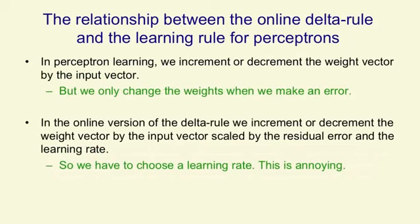There's an interesting relationship between the delta rule and the learning rule for perceptrons. If you use the online version of the delta rule where we change the weights after each training case, it's quite similar to the perceptron learning rule. In perceptron learning, we increment or decrement the weight vector by the input vector, but we only change the input vector when we make an error.